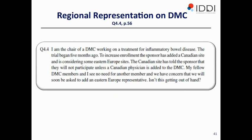Question: I am the chair of a DMC working on a treatment for inflammatory bowel disease. The trial began five months ago. To increase enrollment, the sponsor has added a Canadian site and is considering Eastern European sites. The Canadian site says they will not participate unless a Canadian physician is added to the DMC. My fellow DMC members and I see no need for another member. I think they can identify consultants from different regions as ad hoc consultants, and if that region enrolls a threshold number of patients, that consultant could be added to the committee.